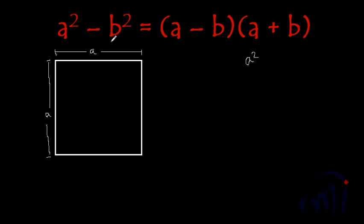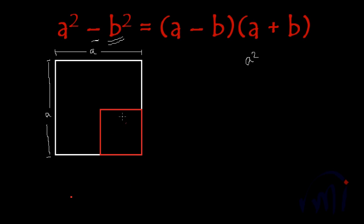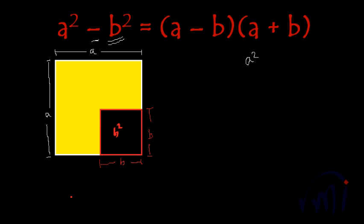Now we have minus b square. That means we have to remove a square from this area whose one side is equal to b. This is the square whose area is b square, and each side of the square is equal to b. So a square minus b square will be the remaining area — this is the bigger square whose area was a square, minus the area of this smaller square whose area is b square.